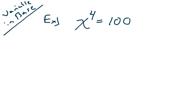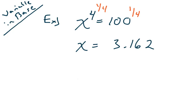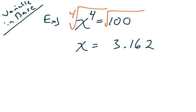Agent number one, try this: x to the fourth equals 100. You might think it's too easy, but if you raised both sides to the reciprocal power you'd get x ≈ 3.162 — but that's not fully correct. Raising both sides to the one-fourth power is the same as taking the fourth root, and whenever you do an even root you always get plus or minus. So there are actually two numbers that satisfy the equation. Even roots always give a plus or minus.